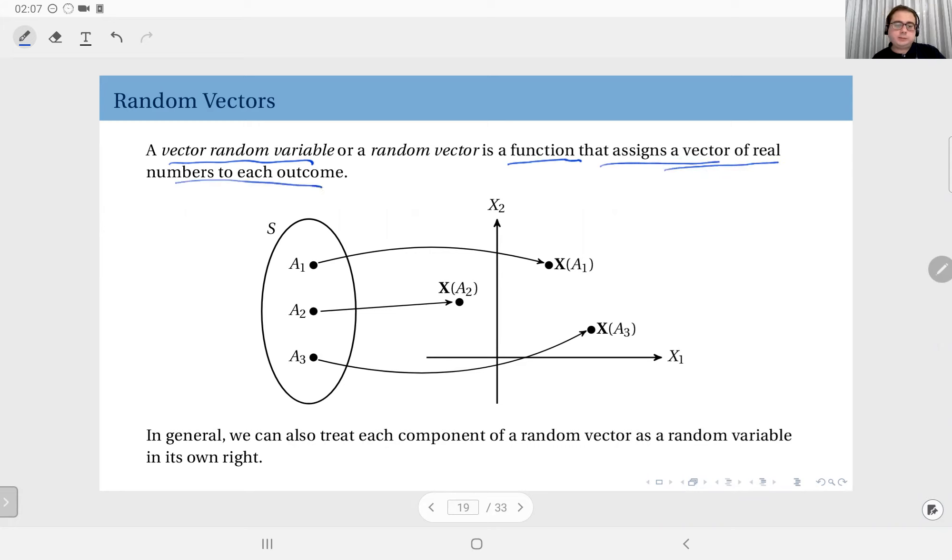The definition is very similar to the definition of a random variable. If you remember, with random variables we assigned one real number to each outcome. Here we are not assigning one real number, but a random vector or a real vector in the space R to the power n, whatever n may be. That is the dimension of this random vector.